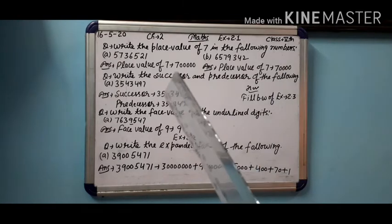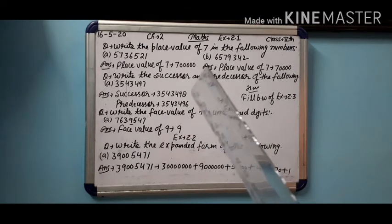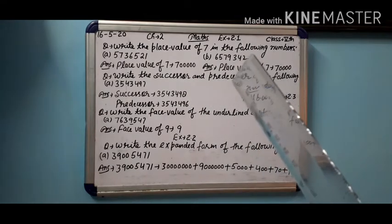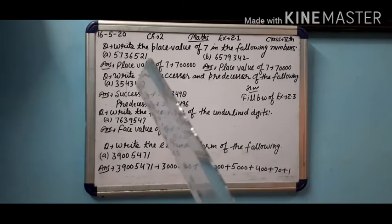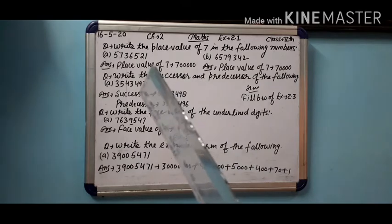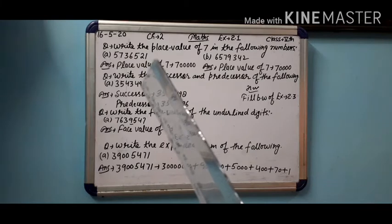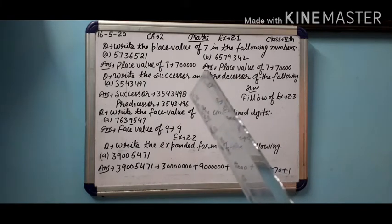Next question is about successor and predecessor. In successor we do plus one, in predecessor we do minus one. So to find the successor of 3543497, we write successor and add plus one. Look at the last digit - when we add one to 97, it becomes 98.